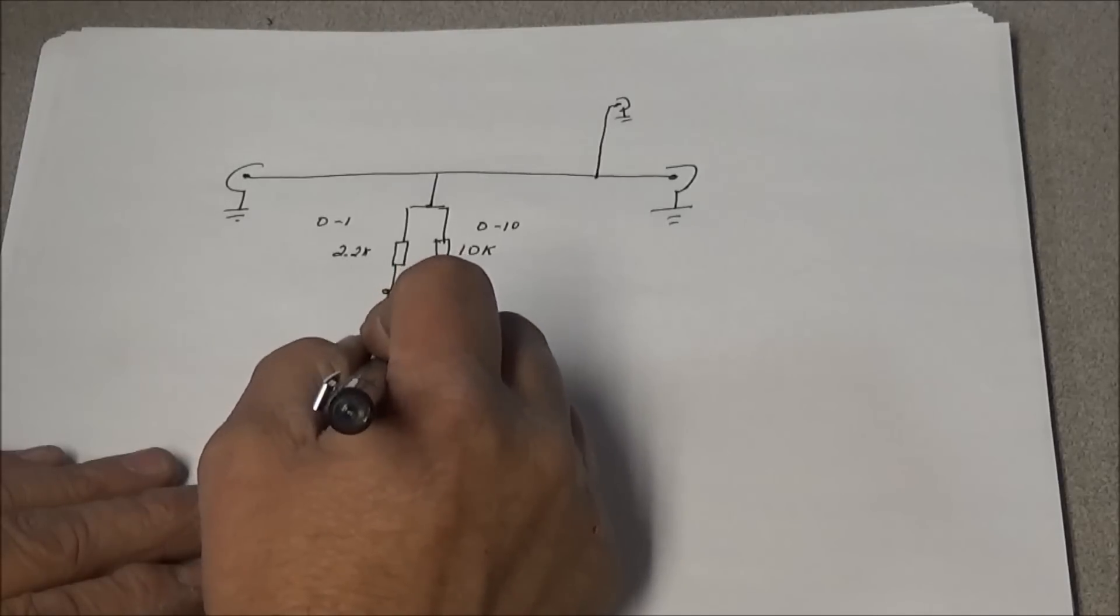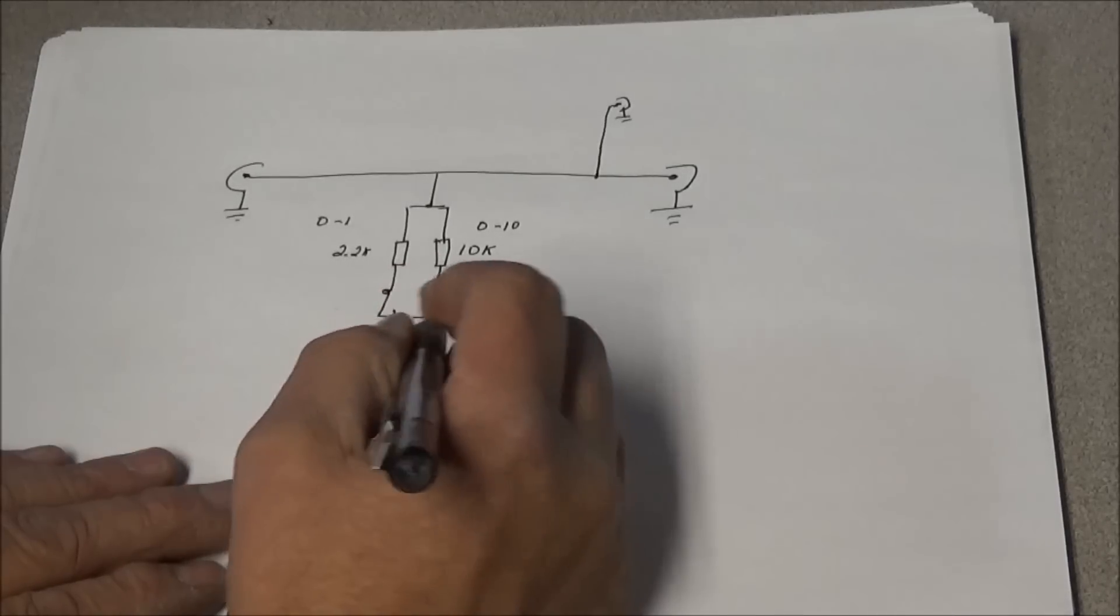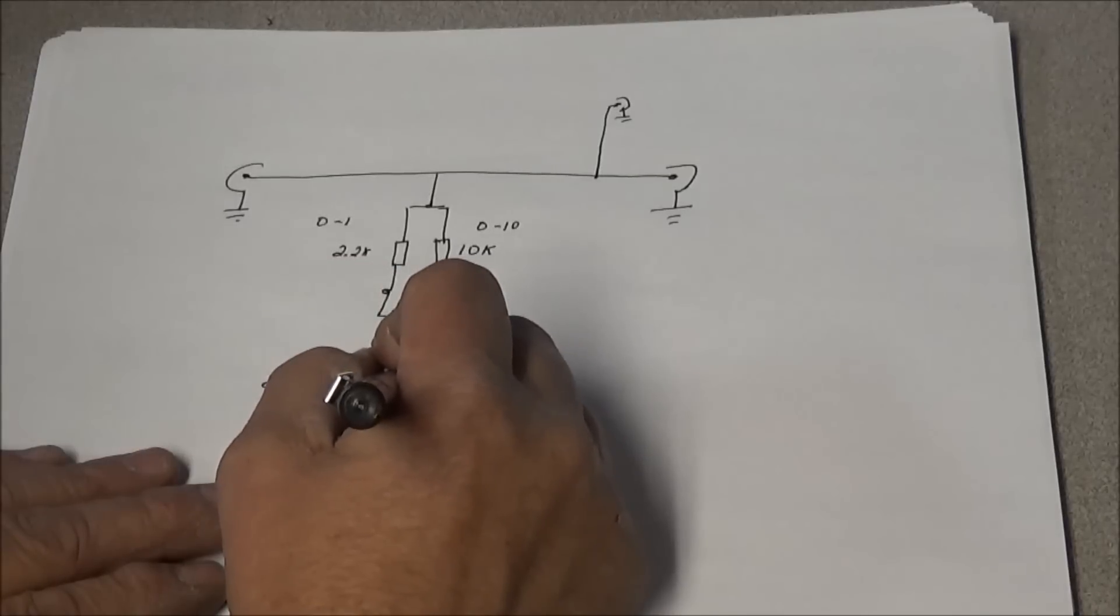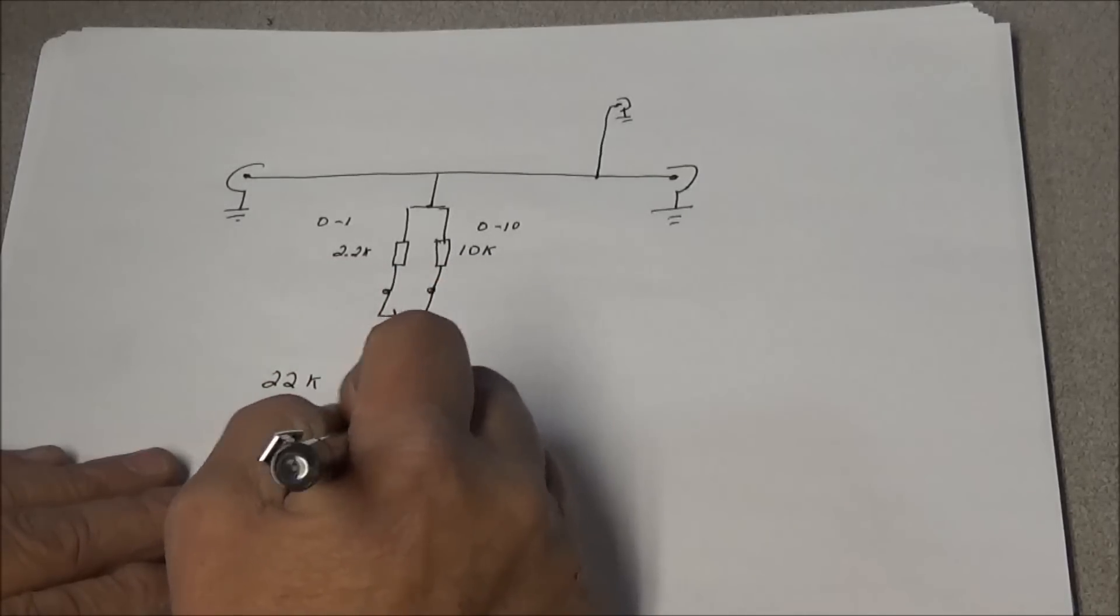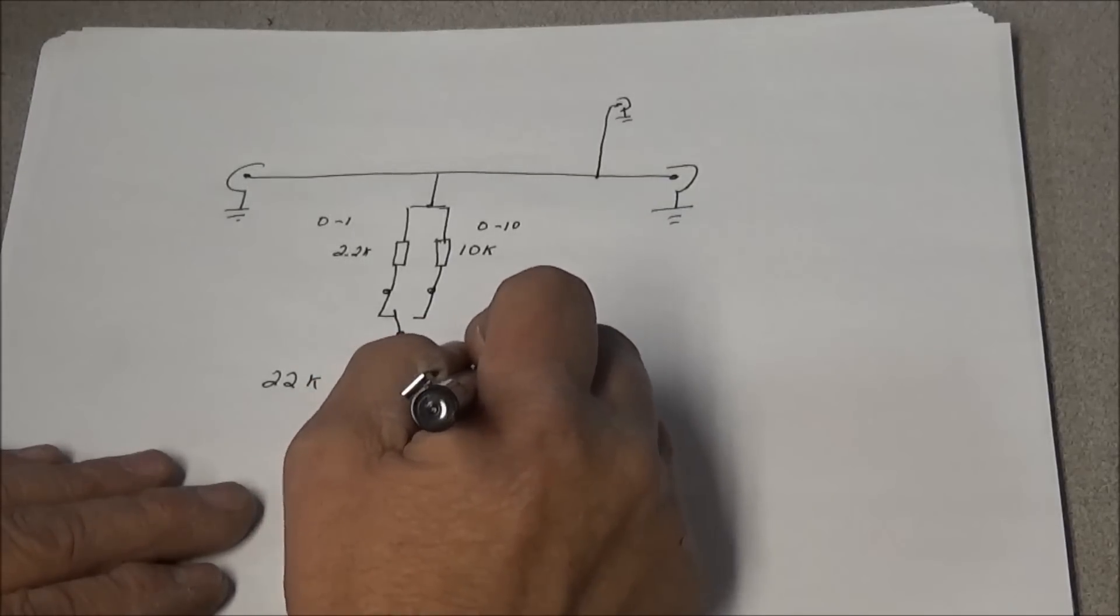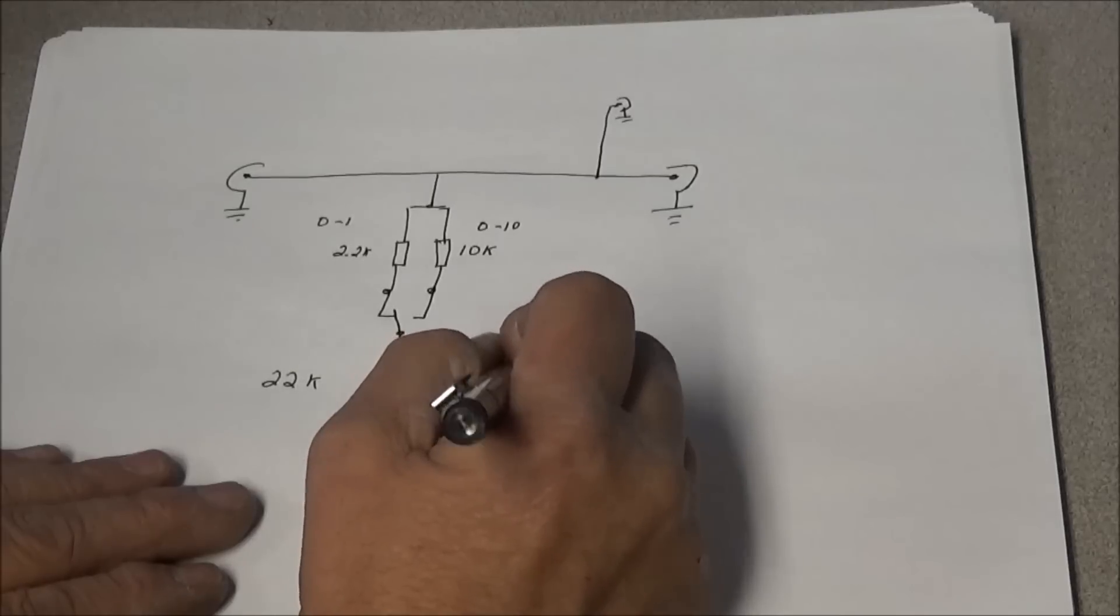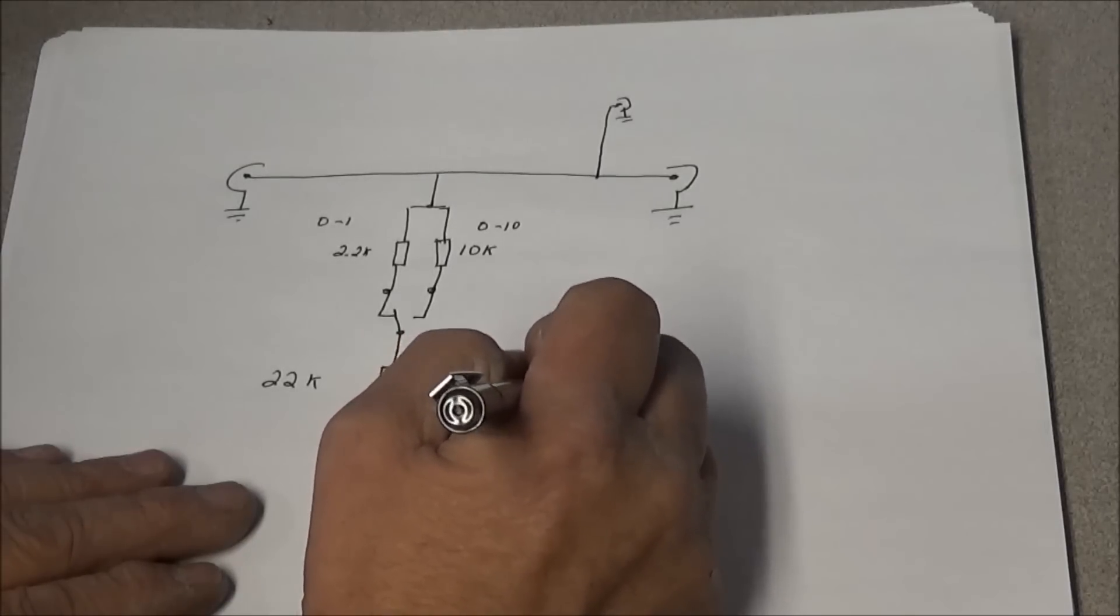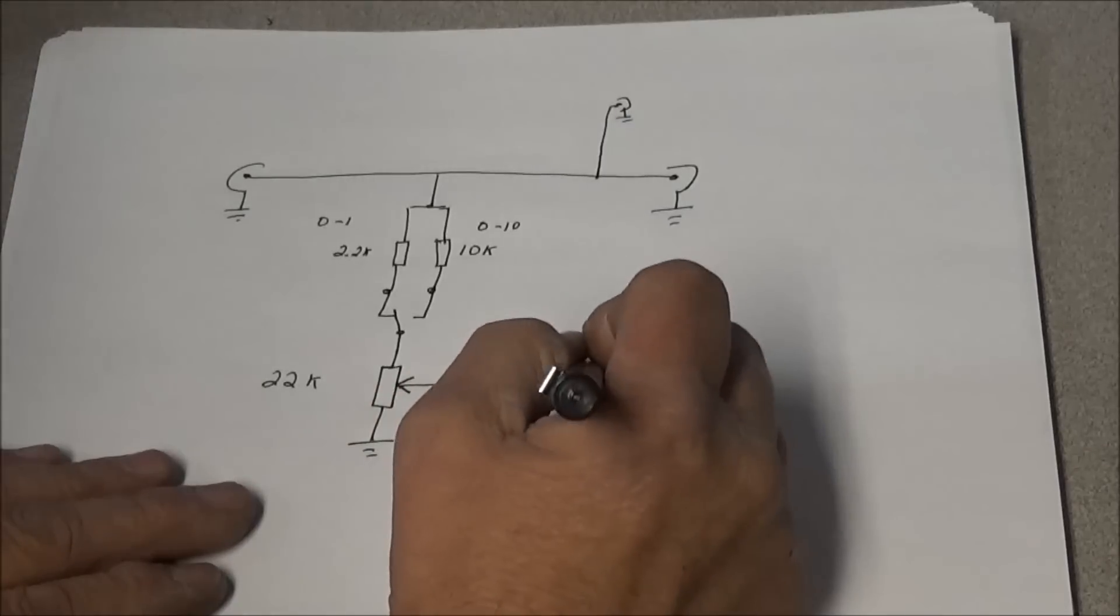And we're going to come here and we're going to add another resistor, that is a 22k potentiometer. This side is going to go to ground and on our wiper side we're going to come off our wiper side and we're going to install a 1N4148 diode, just a simple diode.